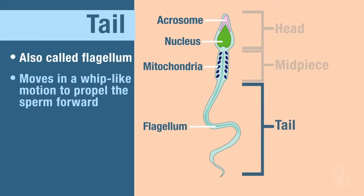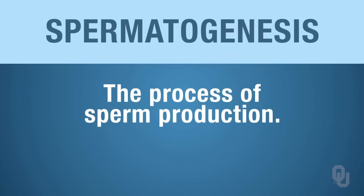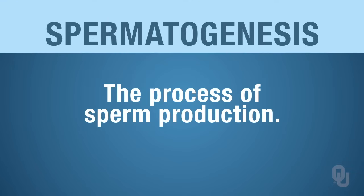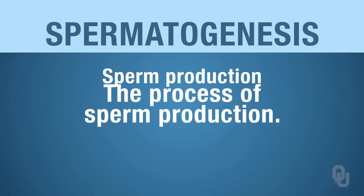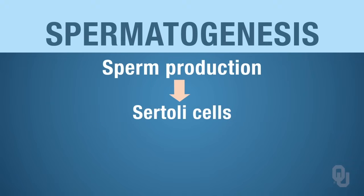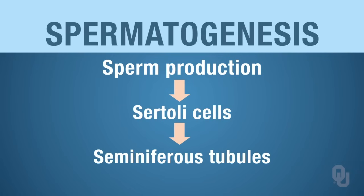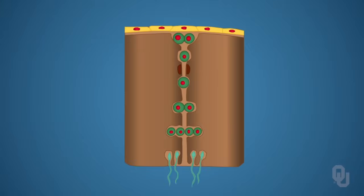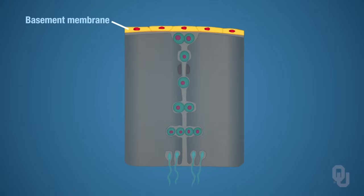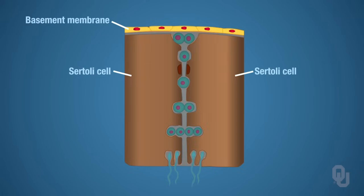So how are those sperm produced? We're going to look at spermatogenesis — this is the process of sperm production, how the sperm are actually produced. Keep in mind that sperm production is associated with the Sertoli cells, and remember that the Sertoli cells are associated with the seminiferous tubules. We're going to begin at the basement membrane, and spermatogenesis occurs between the Sertoli cells.